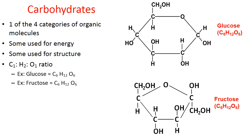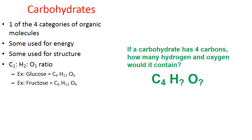Molecules that have the same formula but are arranged a bit differently are called isomers. So glucose and fructose are good examples of isomers. Now if you know the one-to-two-to-one ratio, and I were to give you this question — pretend a carbohydrate has four carbons, how many hydrogens and oxygens would it contain? — the answer would be eight hydrogens and four oxygens.